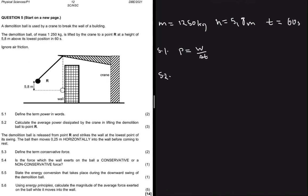5.2 says calculate the average power dissipated by the crane in lifting the demolition ball to point R. The average power dissipated by the crane in lifting the demolition ball to point R, the height is 5.8 meters.